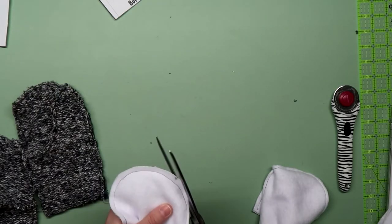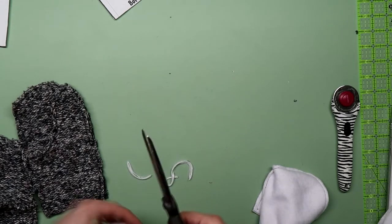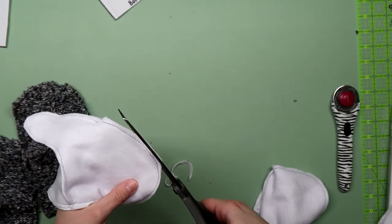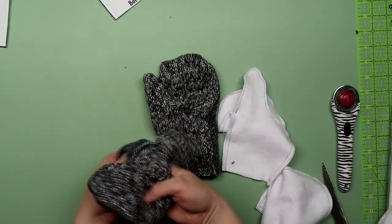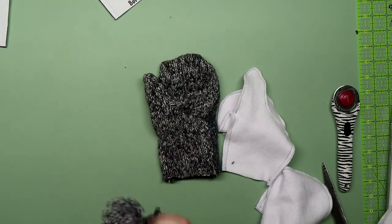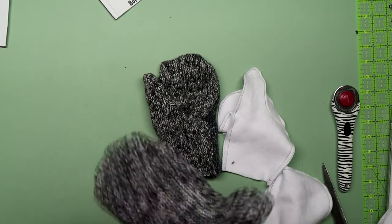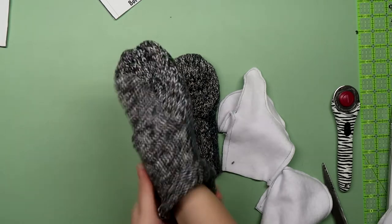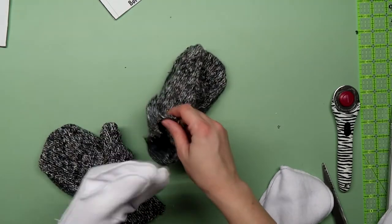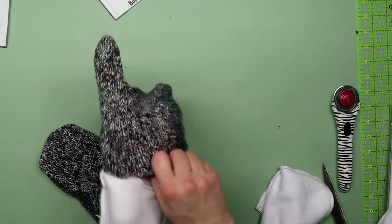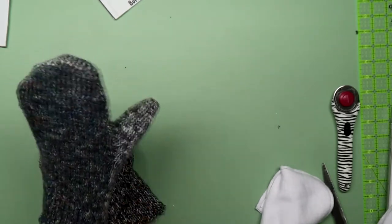Trim down the seam allowance to an eighth of an inch. This will help the curved areas lay flatter. Flip the sweater fabric right side out and push out the thumb. Put the lining on your hand and slip it into the outer mitten. They will be wrong sides together, this way all the seams are hidden inside.